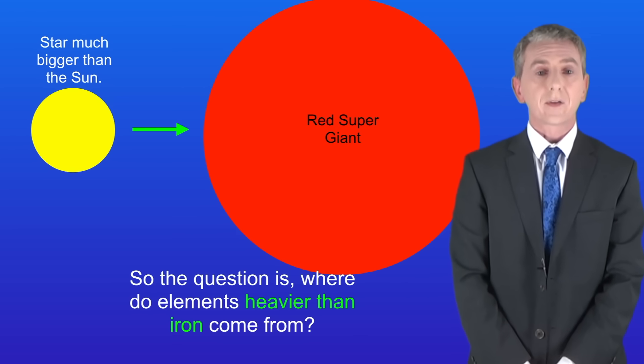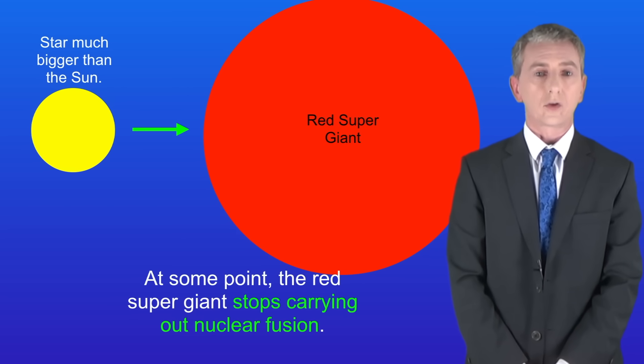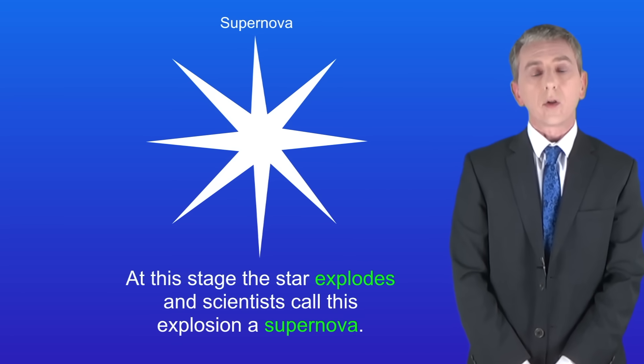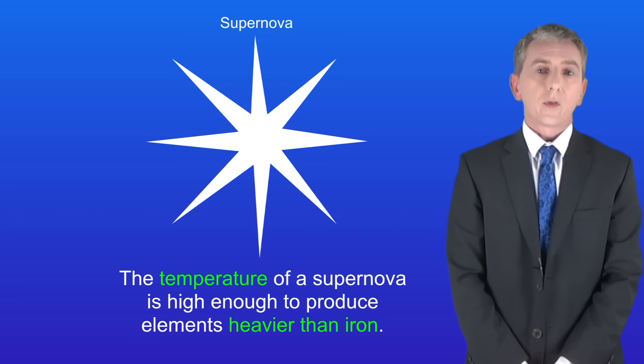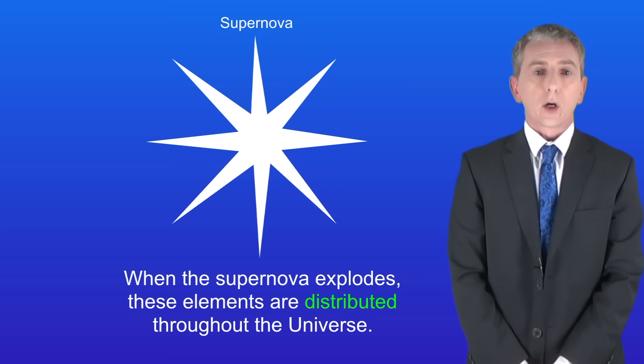So where do elements heavier than iron come from? At some point the red supergiant stops carrying out nuclear fusion and the star explodes. Scientists call this explosion a supernova. The temperature of a supernova is high enough to produce elements heavier than iron. Remember that elements heavier than iron are only produced in a supernova, and you could be asked that in your exam. When the supernova explodes these elements are distributed throughout the universe.